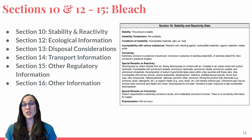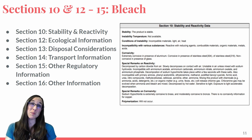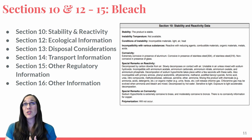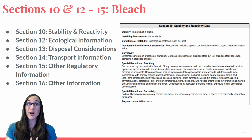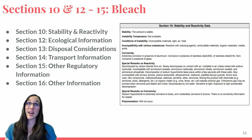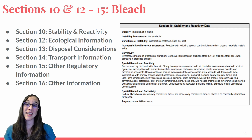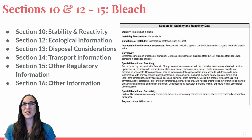Sections twelve through sixteen: section twelve is ecological information — what will this do to the environment? Section thirteen is disposal considerations — how should you dispose of any used chemical? Section fourteen is transport information — if you needed to take this chemical on a road trip, how should you transport it from point A to point B? Section fifteen is other regulatory information, and section sixteen is other general information. If there's anything additional you'd like to know about a chemical, check out sections fifteen and sixteen.